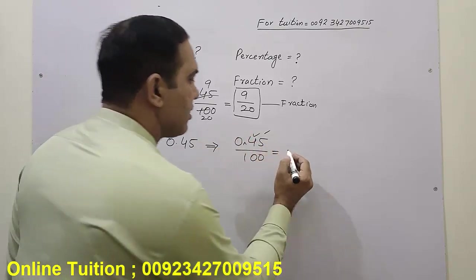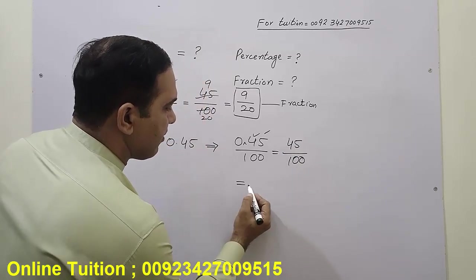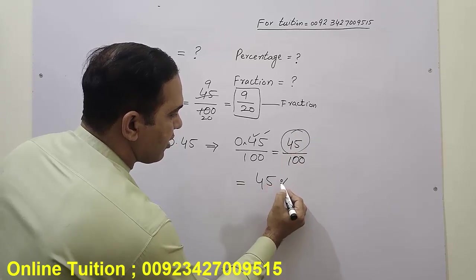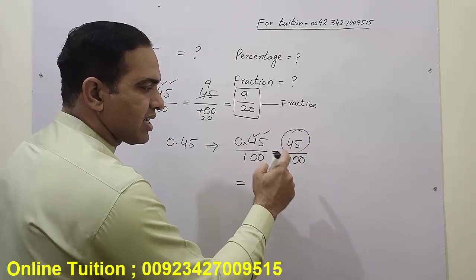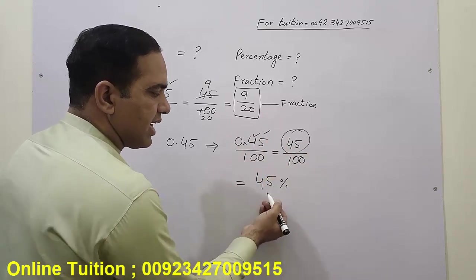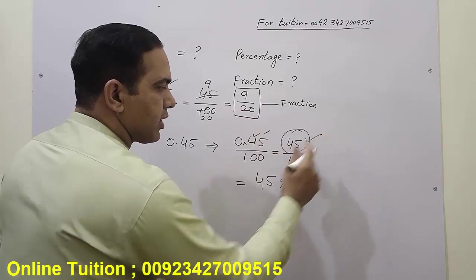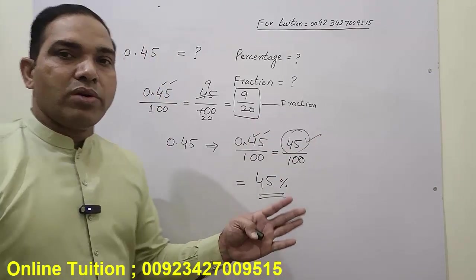When any fraction has 100 as the denominator—meaning 45 over 100—then it will be the percentage of this number: 45 percent. If any fraction has denominator 100, it will be the percentage of the numerator. 45 is the answer.